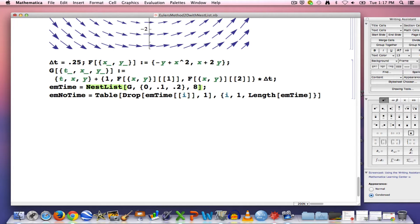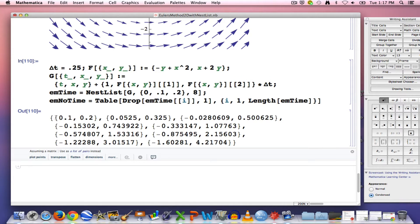Now you can enter this code and see what results. What results is a list of points that approximate the true solution of the corresponding initial value problem based on differential equations, where these expressions are the right-hand sides, dx dt equals negative y plus x squared, and dy dt equals x plus 2y. With this initial condition, x is 0.1, y is 0.2, after 8 iterations based on delta t being 0.25, which again means this last point is going to approximate the true solution at time equals 2. 8 times 0.25 is 2.